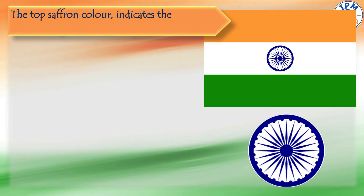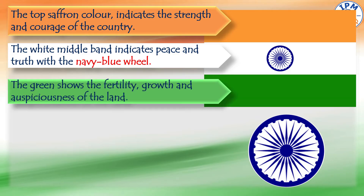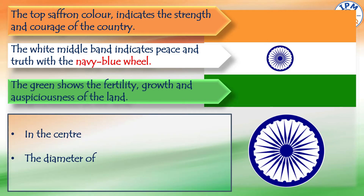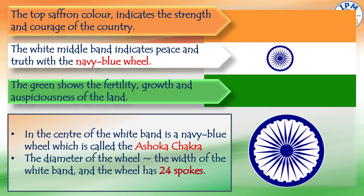In our national flag, the top saffron colour indicates the strength and courage of the country. The white middle band indicates peace and truth with a navy blue wheel. The green shows the fertility, growth and auspiciousness of the land. In the centre of the white band is a navy blue wheel called the Ashok Chakra. The diameter of the wheel approximates the width of the white band and the wheel has 24 spokes.